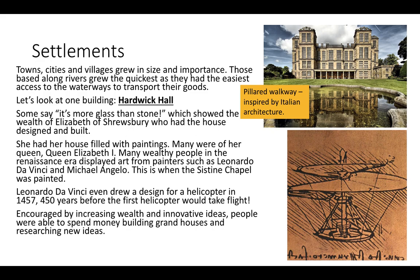Towns, cities, and villages grew in size and importance. Those based along rivers grew the quickest as they had the easiest access to waterways to transport their goods. The building here with the pillared walkway is Hardwick Hall, and the architecture of the time is based on Italian architecture, because Italy was the birthplace of the Renaissance. Some say Hardwick Hall is more glass than stone — windows, for the first time, are becoming central to architecture. Glass is cheaper, better, and easier to get, and as a sign of status, the more glass in your building, the wealthier it makes you look.